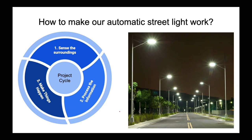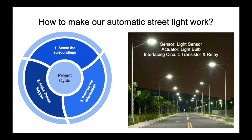Let us move on to the electronic aspects. For making an automatic street light, we need three separate components. For realizing step number one, we need a sensor — in this case, a light sensor — since we need to sense the light in our surroundings. Moving directly to the third step, making things happen: we have to switch on or switch off the light bulb, and that is done by the actuator.